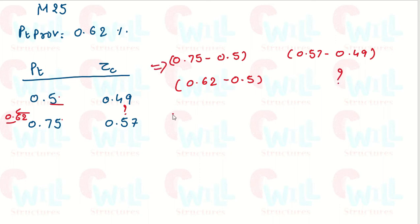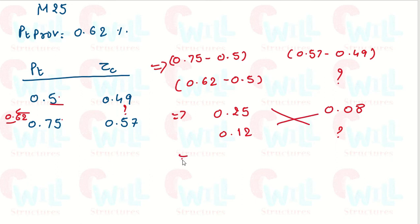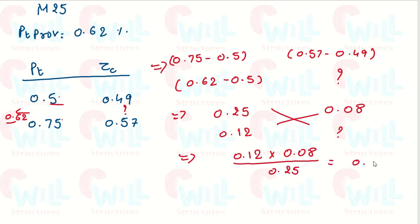Computing the differences: 0.75 − 0.5 = 0.25; tau c difference: 0.57 − 0.49 = 0.08; and PT difference for our value: 0.62 − 0.5 = 0.12. Now doing cross multiplication: (0.12 × 0.08) / 0.25 = 0.0384. But this is not directly the value of tau c — we still need to add or subtract this increment.